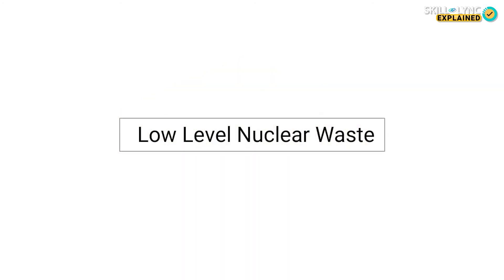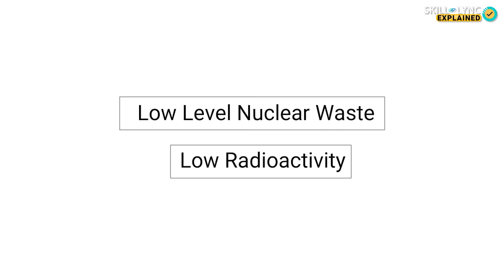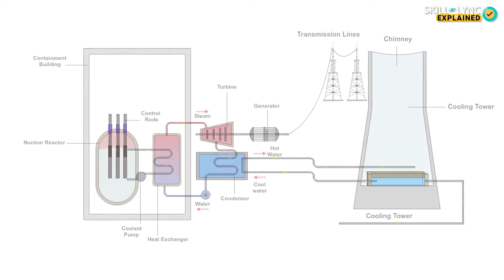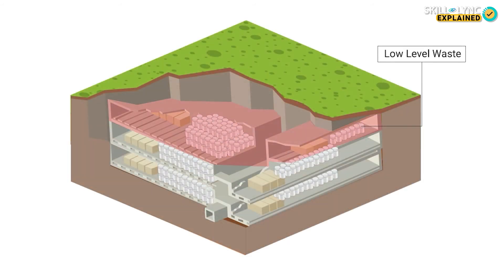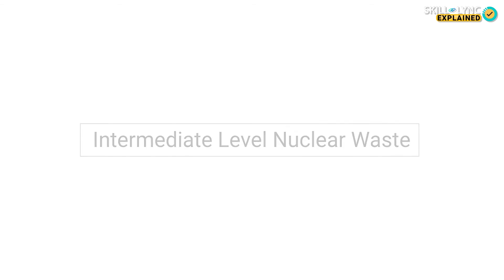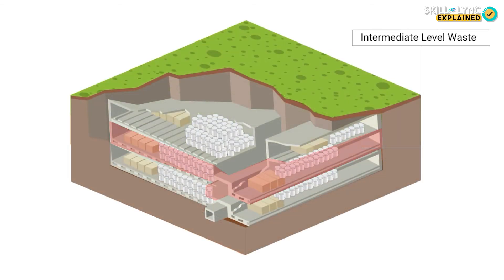Low level waste, as the name suggests, has very low radioactivity. For example, when the reactor water comes in contact with the nuclear fuel, the waste that is generated from reprocessing this water is contaminated. Such waste can be stored in pits and does not require shielding while handling. Intermediate level waste, on the other hand, does require shielding because of the high level of radioactivity but does not need to be cooled.